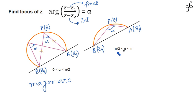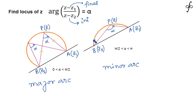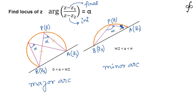When alpha lies between pi by 2 to pi, the rotation angle is obtuse, so BPA will be obtuse every time for all points on the path. In that case the locus is going to be the minor arc of a circle with AB as chord, because only on the minor arc is the angle between the two chords obtuse. So when alpha is between 0 to pi by 2 the locus is the major arc, and when alpha is between pi by 2 to pi it is the minor arc.